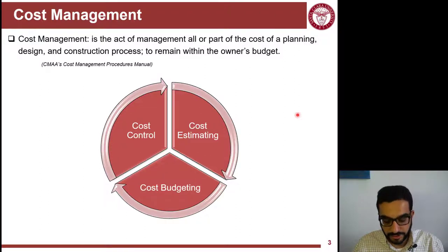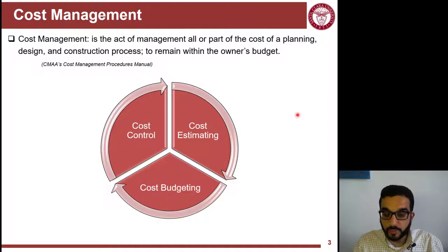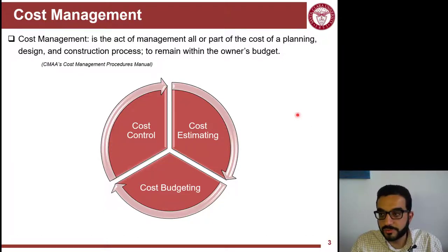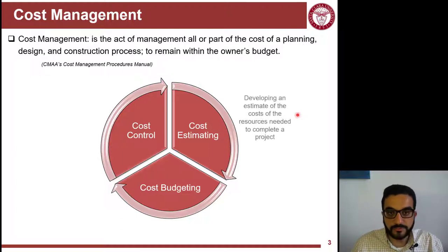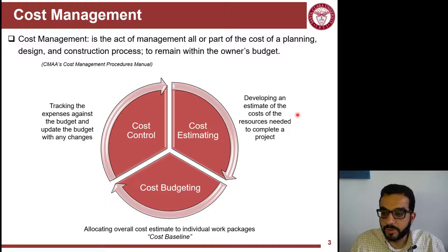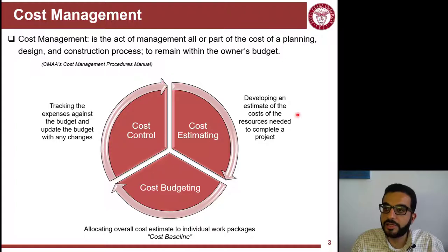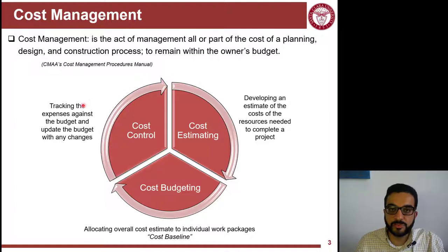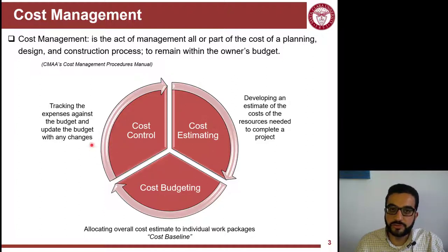Cost management is a very huge area. It covers three main functions within construction practices, dealing with managing part or all of the project costs through the design, construction, and planning processes. The goal is always to remain within the owner's budget. You start by first estimating the cost of the project, then negotiate with the owner. The purpose of the cost estimate is mainly to win projects and set a baseline — that's done in cost budgeting — and then you track your expenses against this cost baseline through the cost control function. It's a loop feeding into each other.